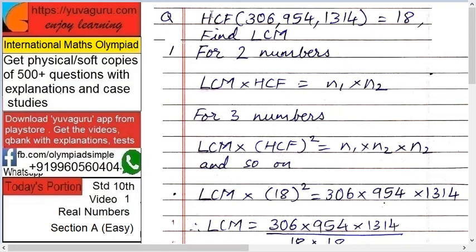Let's start. HCF of three numbers 306, 954, and 1314 is 18. Find its LCM. Here it's like this: For two numbers, remember this formula throughout your life.